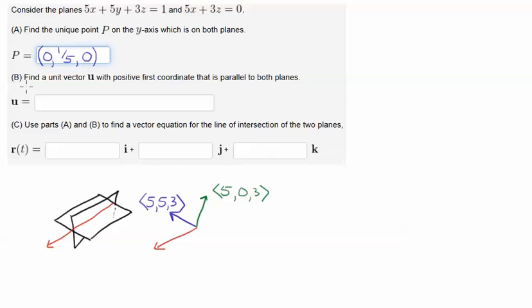Now, the next question asks us to find a unit vector u with positive first coordinate that is parallel to both planes. If both planes intersect, then the vector that is parallel to both planes will be the vector that follows along the line of intersection of these planes. So it goes in this direction, almost like a pinwheel.